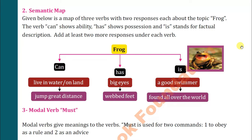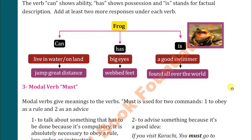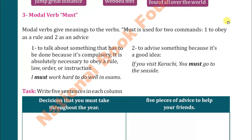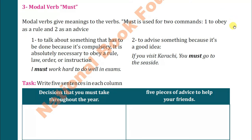Then we come to the next exercise: the modal verb 'must.' Modal verbs give meanings to the verbs. 'Must' is used for two commands: number one, to obey as a rule, and number two, as advice — to talk about something that has to be done because it is compulsory or absolutely necessary to obey a rule, law, order, or instruction.